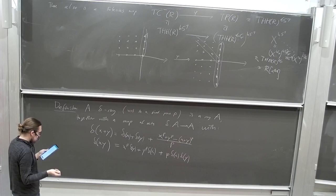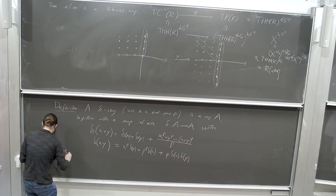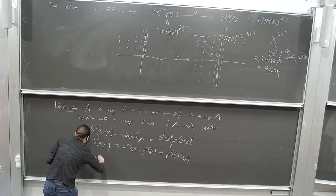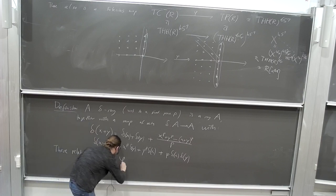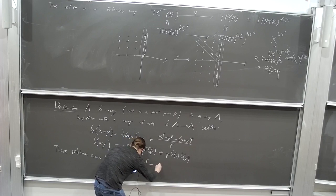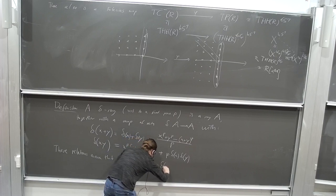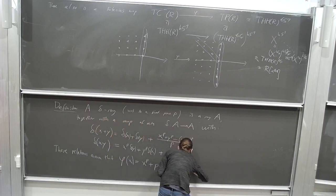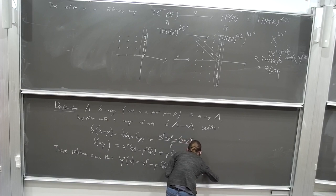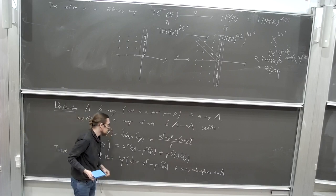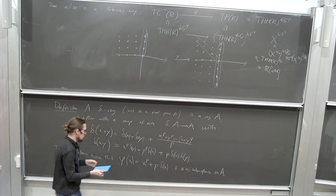These are some algebraic rules, but it should be clear that you can compute δ of some polynomial in terms of δ of the things the polynomial is built from, by inductively applying these rules. These relations ensure that φ, defined as φ(x) = x^p + p·δ(x), is a ring endomorphism on A. In some sense, δ is the thing you need to add to the p-th power map in order to actually make it into a homomorphism.